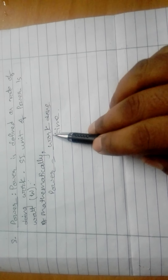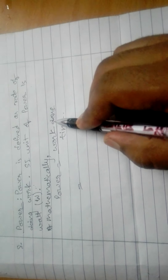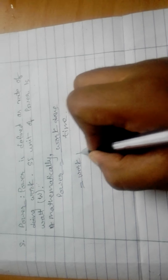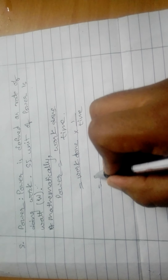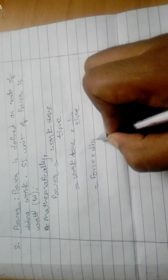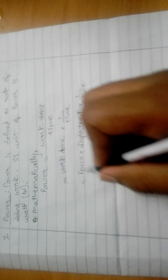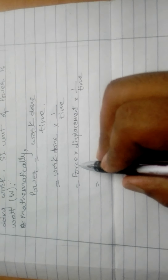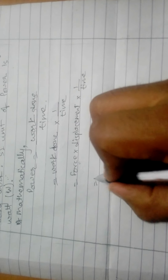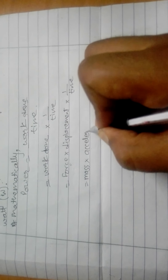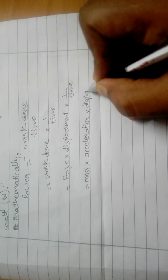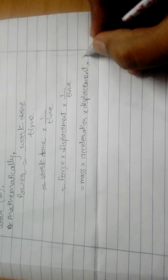Once again, we repeat the same steps. Work done is a derived quantity, but time is a fundamental quantity. So we need to reduce work done into fundamental terms, while time remains the same. We separate these: work into one upon time. Work done equals force into displacement, so we have force into displacement into one upon time. Force is still a derived quantity, so we reduce it: mass into acceleration. Displacement and one upon time are copied from the previous step.